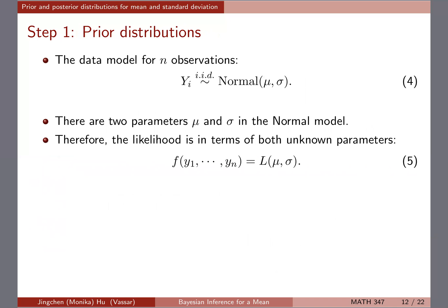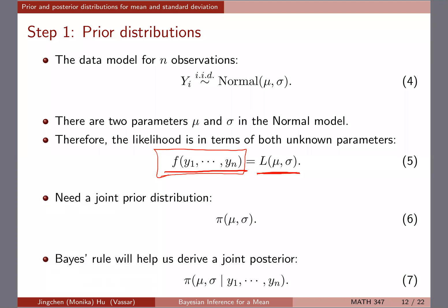If both parameters are unknown, we try to express the joint PDF as the likelihood function of the two unknown parameters. Generically, you write pi(mu, sigma) for the joint prior distribution, and then eventually derive a joint posterior. The general procedure — you have the likelihood, you have the prior, and you get the posterior — is the same as we learned for the beta-binomial case.